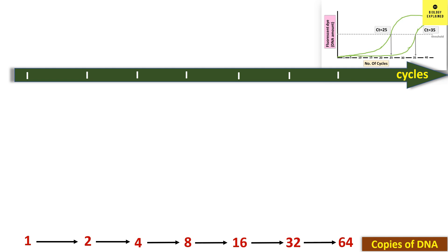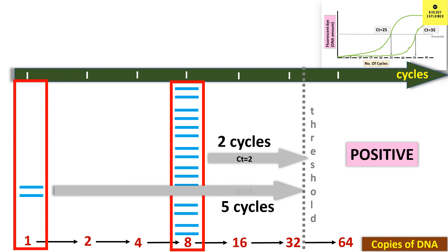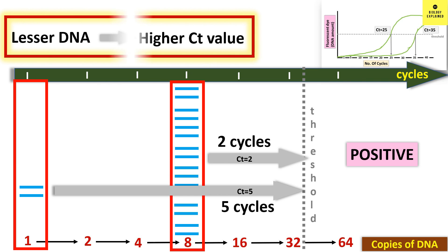Now, let's say this detectable level is 32 copies of DNA, that is the threshold is kept at 32 copies. Something above 32 will be positive. If our starting material is 8 copies of DNA, then we will reach the threshold in 2 cycles, that is CT is 2 in this example. Again, if the starting material is 1 copy of DNA, then we need 5 cycles to cross 32, that is CT is 5. So less the DNA, higher is the CT value.